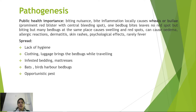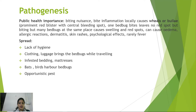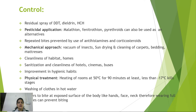Pathogenesis includes biting nuisance, bite inflammation causing locally swollen areas known as wheals or bullae — prominent red blisters with a central bleeding spot. Multiple bites at the same site cause swelling and red spots. Other effects include edema, allergic reactions, dermatitis, skin rashes, and psychological effects. Spread occurs through lack of hygiene, sharing clothing or luggage, infested bedding and mattresses, and bats or birds harboring bed bugs. They are also opportunistic pests.